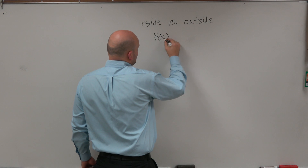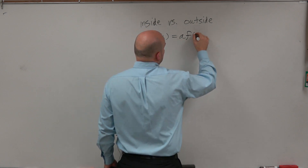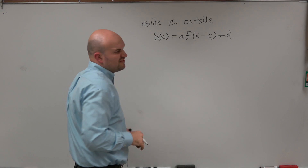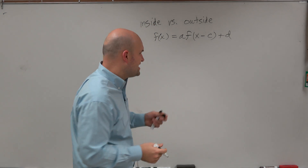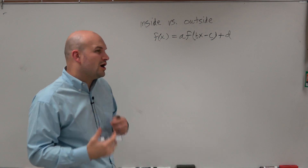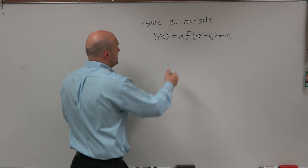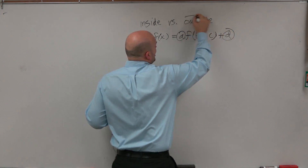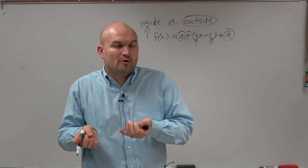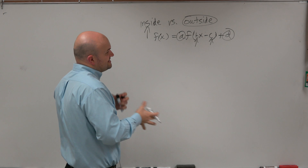For any function — it doesn't really matter what the function is — we can talk about different values for a, b, c, and d. Notice how a and d are outside the function, and b and c are inside the function. That's very important, because a lot of times we get confused about which transformation applies, and it all really depends on whether it's inside or outside the function.